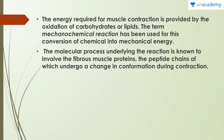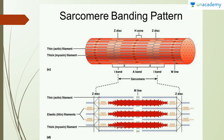The energy required for muscle contraction is provided by oxidation of carbohydrates and lipids. The term 'mechanochemical reaction' has been used for the conversion of chemical energy into mechanical energy. The molecular process underlying this reaction is known to involve the fibrous muscle proteins, the peptide chains of which undergo a change in conformation during contraction.